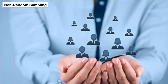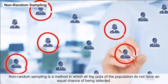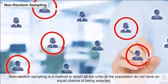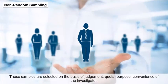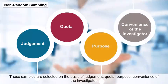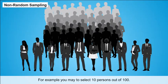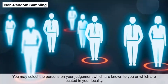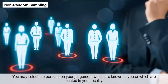Non-random sampling is a method in which all units of the population do not have an equal chance of being selected. These samples are selected on the basis of judgment, quota, purpose, or the convenience of the investigator. For example, if you need to select 10 persons out of 100, you may select persons based on your judgment — those known to you or located in your locality.